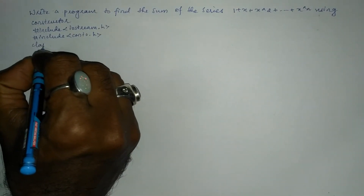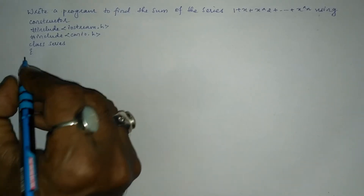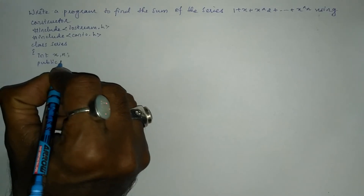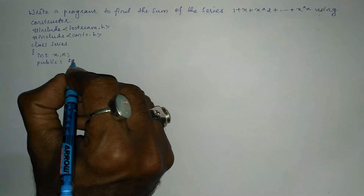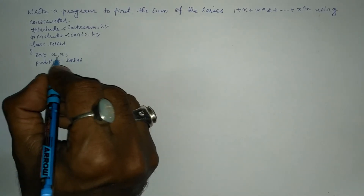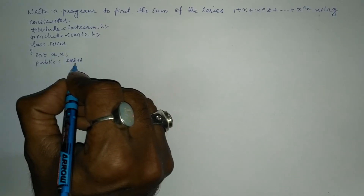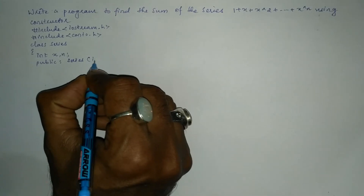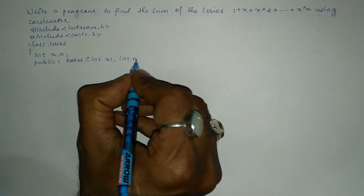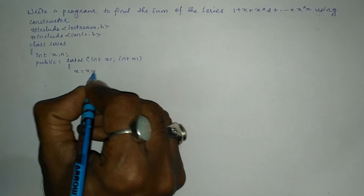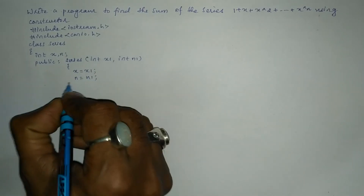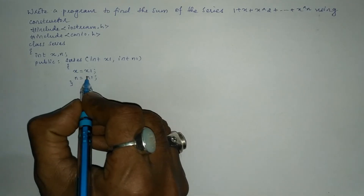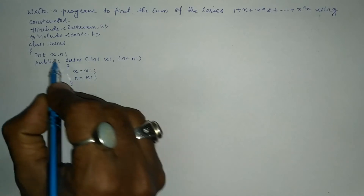Now we are going to define a class called series. Inside the curly brace we are going to declare two variables: int x, n. In the public section we are going to define the constructor. A constructor is a special member function used to initialize data members of the class. The name of the function should be the same as the class name and it should not return any type, not even void. So here I write: series(int x1, int n1) with x = x1 and n = n1.